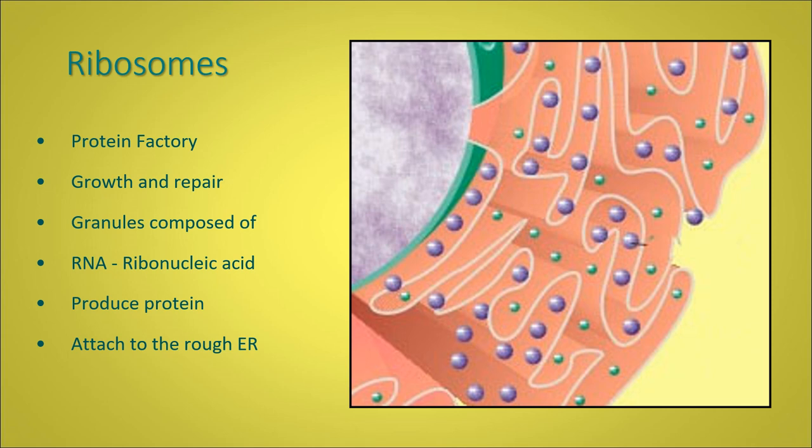They produce protein. They are attached to the rough ER, endoplasmic reticulum. And they are collected by the Golgi apparatus, where they're then processed. So ribosomes are a protein factory for growth and repair made of ribonucleic acid. They look like little ribena in all the pictures.